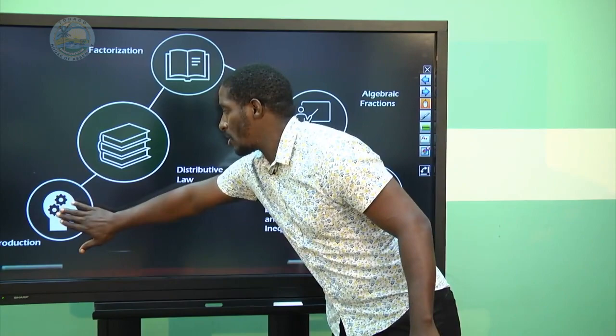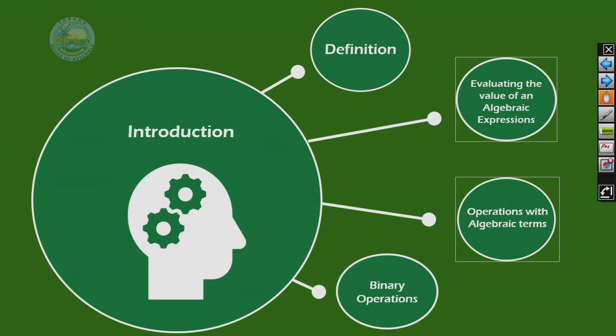In our introduction for today, the objectives that we want to achieve are: one, to define algebra and the associated terms in algebra; two, to evaluate the value of an algebraic expression once the values of the variables are known; three, to simplify algebraic expressions utilizing operations with algebraic terms; and four, to perform calculations utilizing binary operations.